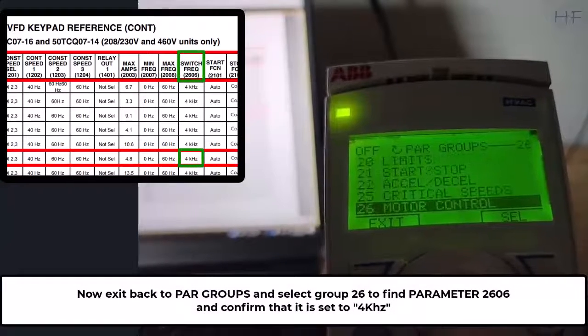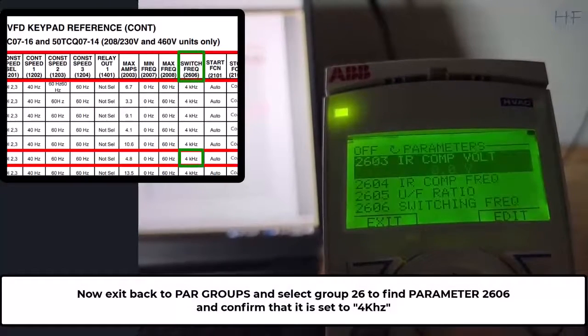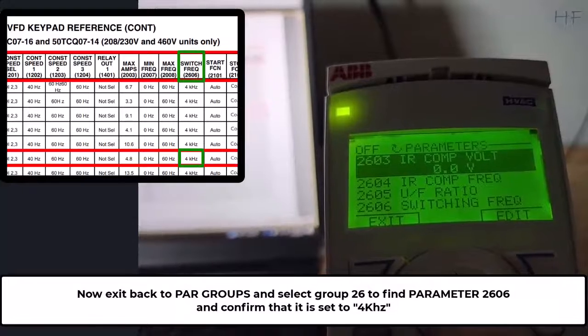Now exit to parameter groups and enter group 26 to find parameter 2606 to confirm that it is set for 4kHz.